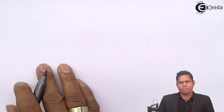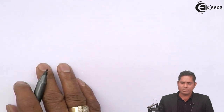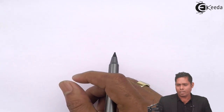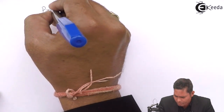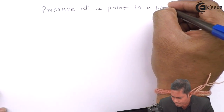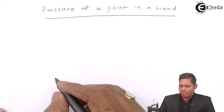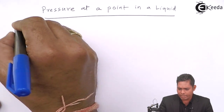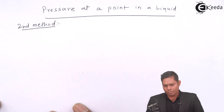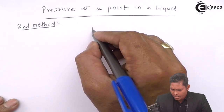We derived the pressure expression for pressure due to a liquid column and got pressure equals ρgh. Let us now see a general method of finding the pressure at different points — a second method.